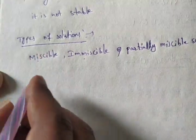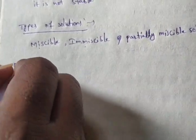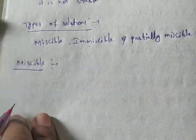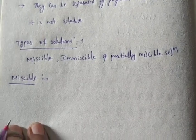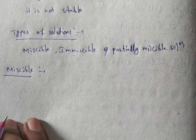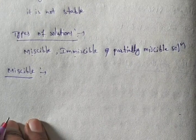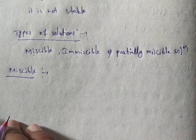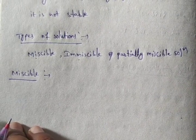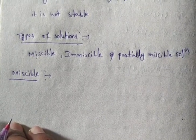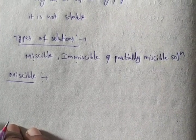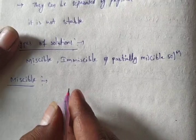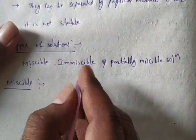One by one, we have to discuss. First one: miscible solutions. What is the miscible solution? Liquids that completely mix to form a solution — that is called miscible. For example, if we take alcohol and water, alcohol completely dissolves in water. So this is called miscible. Miscible means both solute and solvent mix together with uniform composition.